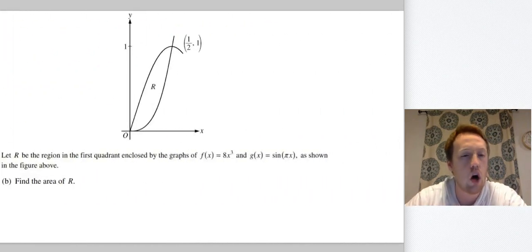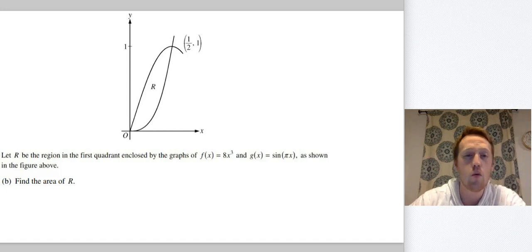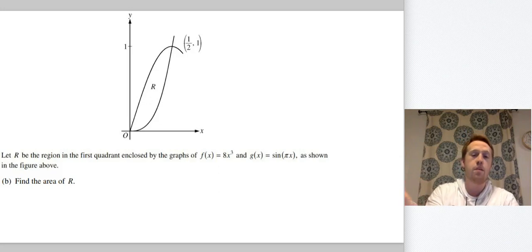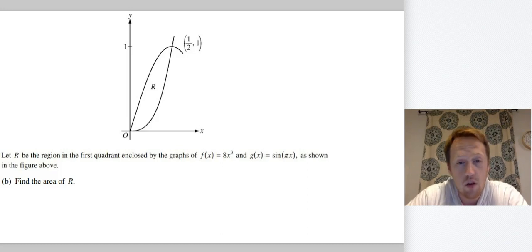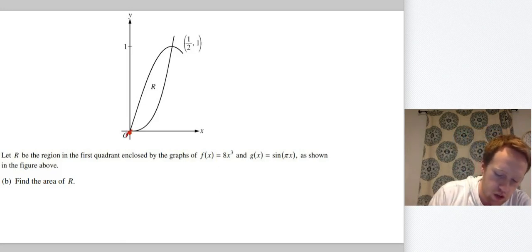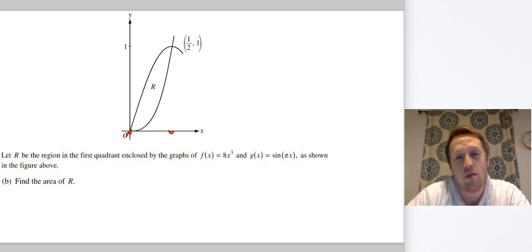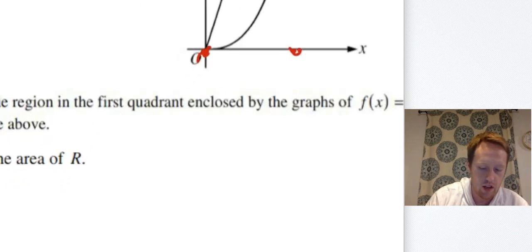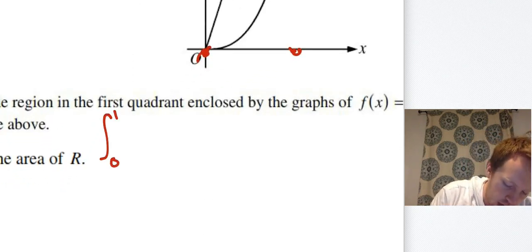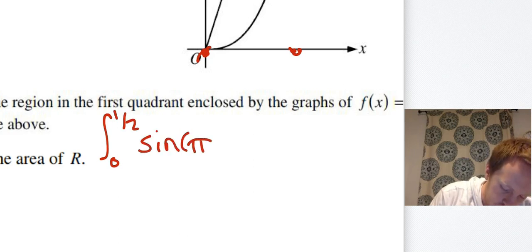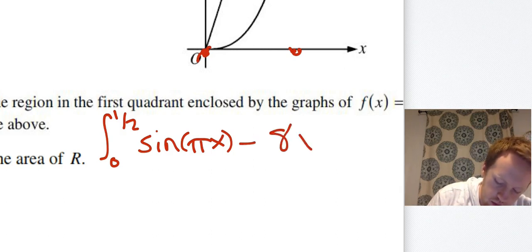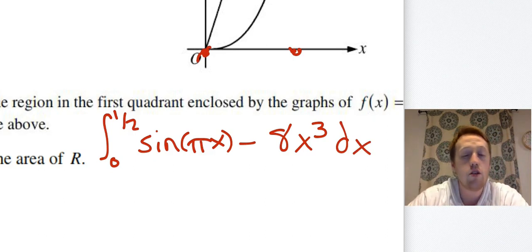Next, find the area of R. We need to figure out which function is on top. You can either know your function families or pick an x-value in the interior of the interval [0, 1/2] to test. Knowing function families, sine is going to be the one on top. So we integrate from 0 to 1/2: the integral of sin(πx) minus 8x³.